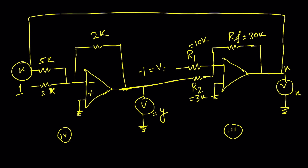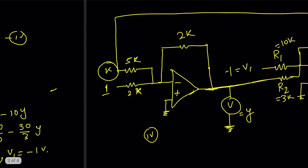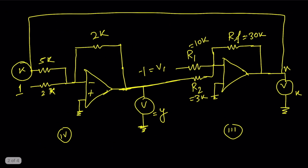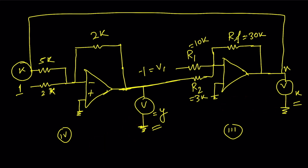If you get this problem in an exam, then you need to do it like this: first, rearrange the equations to express x and y; draw the adder op-amp circuits; compare each equation with the adder output formula; then connect the two circuits together to build the final circuit. The simulation already showed that the two voltmeters give x = -4.33 and y = 0.733 volts. This is a linear equation solution by using op-amp.